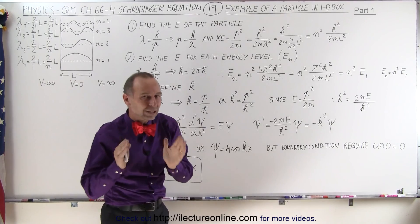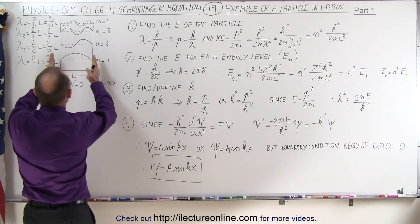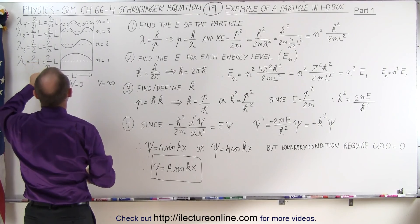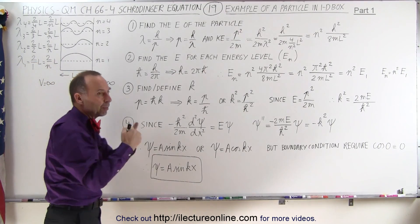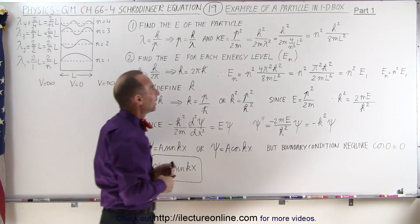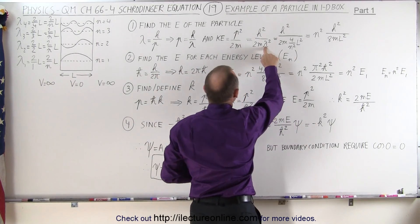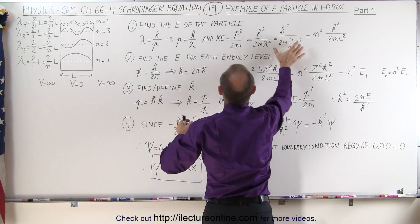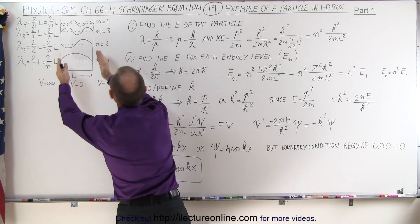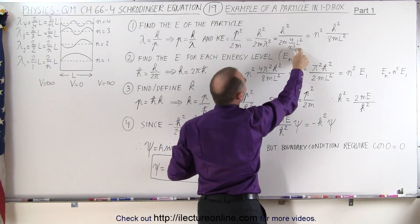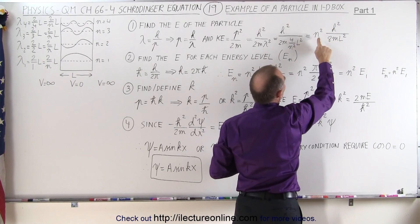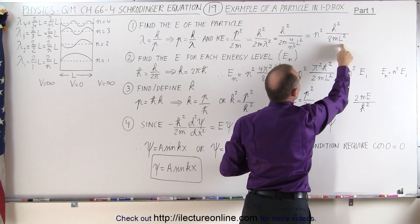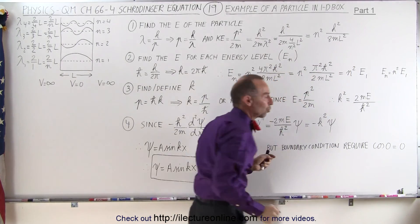For the box, lambda is always equal to 2 divided by n times L, where n is the quantum number representing the energy level. If we replace lambda in our kinetic energy equation with this expression for a one-dimensional box and simplify, we get n squared times h squared over 8 times the mass times the length of the box squared.